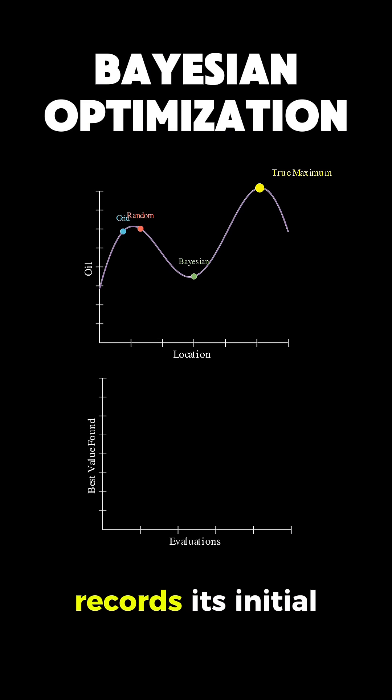Each method records its initial value on the convergence graph on the right. With each new drilling operation, the three approaches show quite different behaviors.